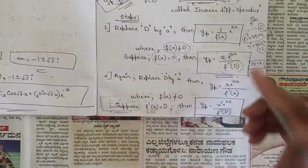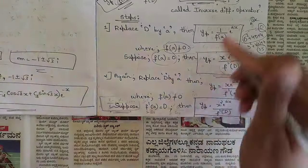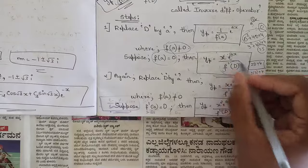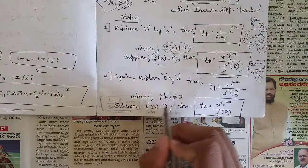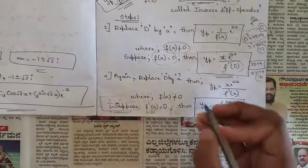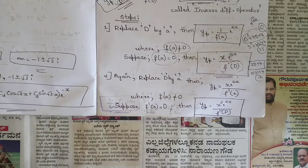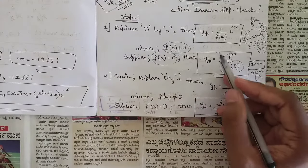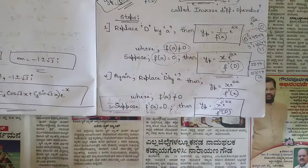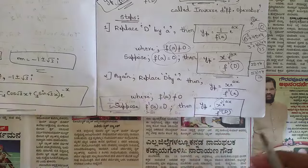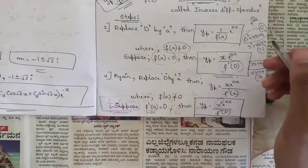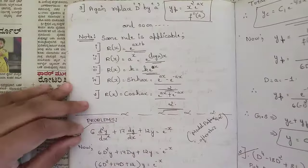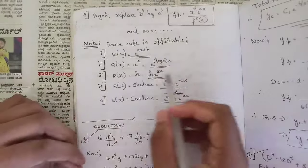If again f'(a) = 0 after taking the derivative, we take the derivative again to get f''(D), and in the numerator we multiply by x². If the denominator is zero again in the next step, we multiply the numerator by x³ and take the derivative of the denominator again. This process continues until the denominator is non-zero.